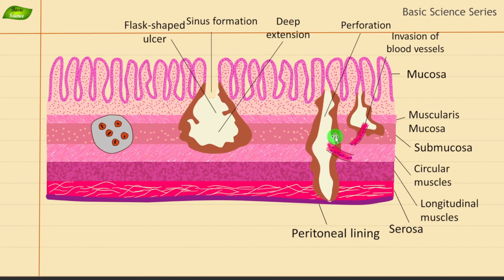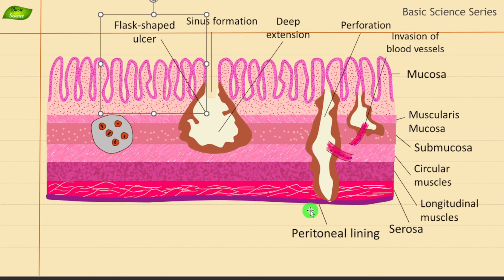Another feature is invasion of the blood vessels. Entamoeba histolytica can invade blood vessels and move to the deeper layers of the intestinal wall. It can also move from the ulcer site to other organs — it can move to the liver and cause extra-intestinal amoebiasis. All these features contribute towards the pathogenesis of Entamoeba histolytica, and a lot of damage can occur in the host.